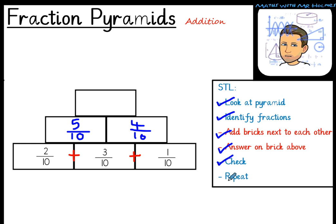And then we repeat. We've got one more to do. Look at our pyramid. Just got this top one to finish. Identify the fractions. Five tenths and four tenths. We add the bricks next to each other. Write my handy little add sign in between them. Five tenths add four tenths. I know that equals nine tenths. The answer goes on the brick above the add sign. Nine tenths will be our missing fraction.